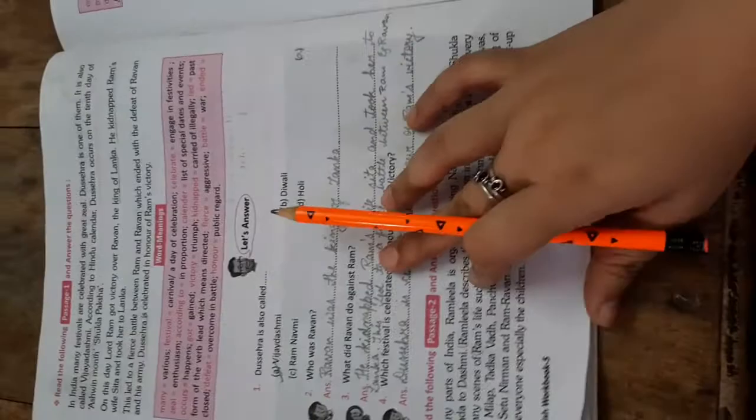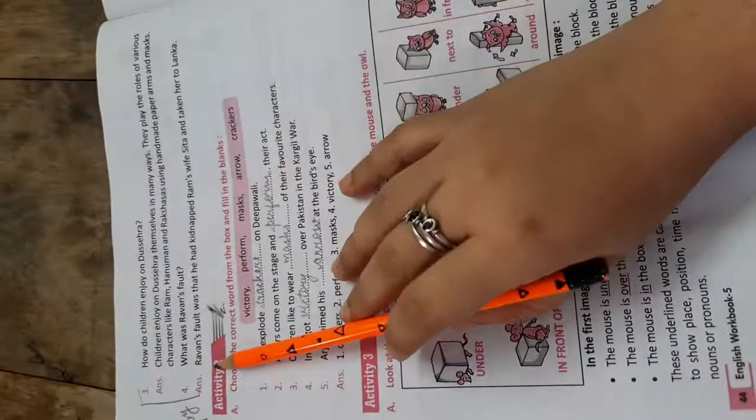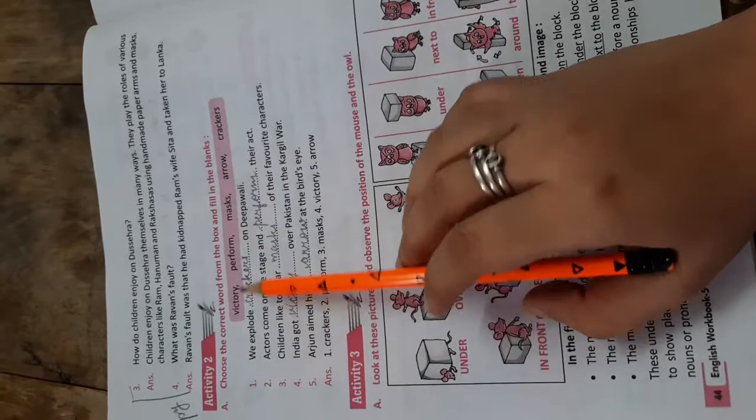And this work you have to do in your textbook only. Clear? Now come to activity 2. Choose the correct word from the box and fill in the blank.